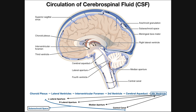The fourth ventricle is important because it has four apertures through which cerebrospinal fluid can exit: a left lateral aperture, a right lateral aperture, a median aperture, and the central canal of the spinal cord inferiorly. All four of these spaces allow CSF to move into the subarachnoid space. For example, CSF in the fourth ventricle can pass through either the left or right lateral apertures into the subarachnoid space.